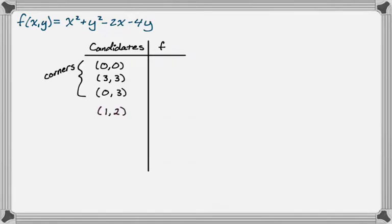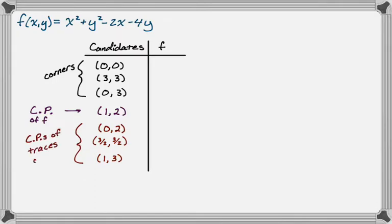The next thing that we got was (1, 2). And that was actually a critical point of the function, right? So we found ∂f/∂x, ∂f/∂y, set equal to 0, solved, we got (1, 2). So a critical point. And then we got three more by looking at the traces and seeing what's happening along those traces. So we got (0, 2), (3/2, 3/2), and (1, 3). All of those were critical points of the traces along the edges of this thing.